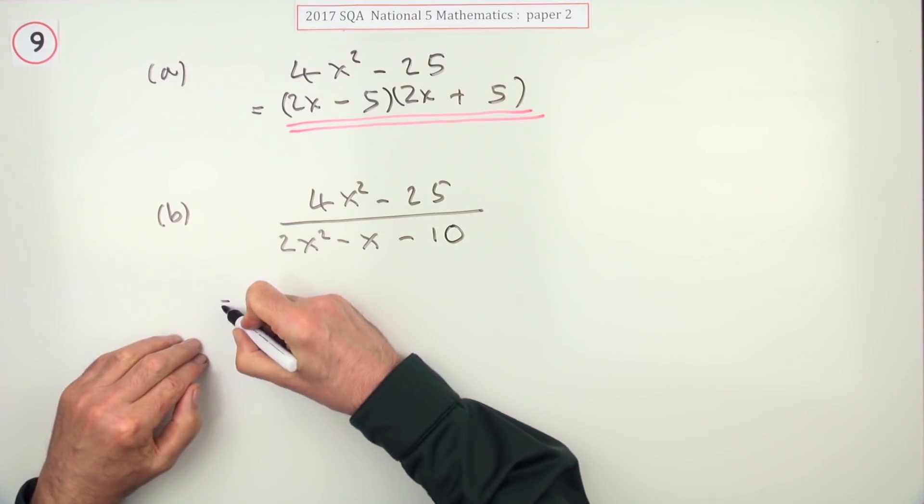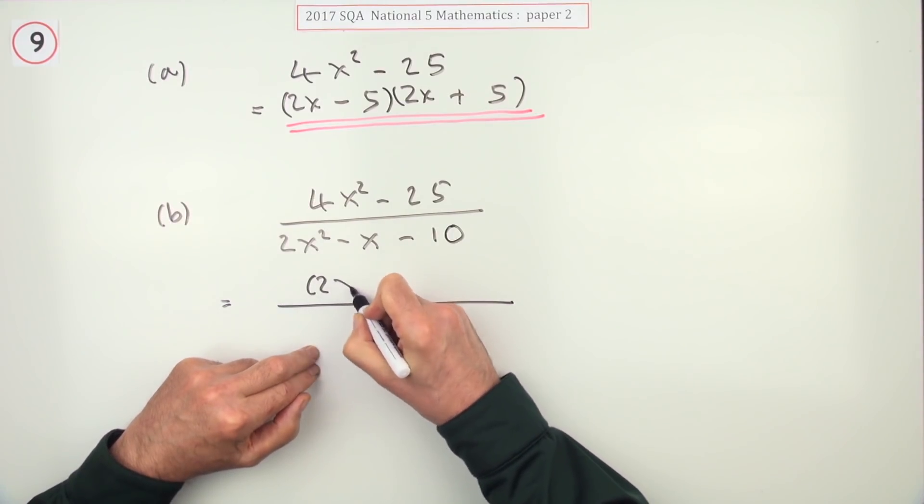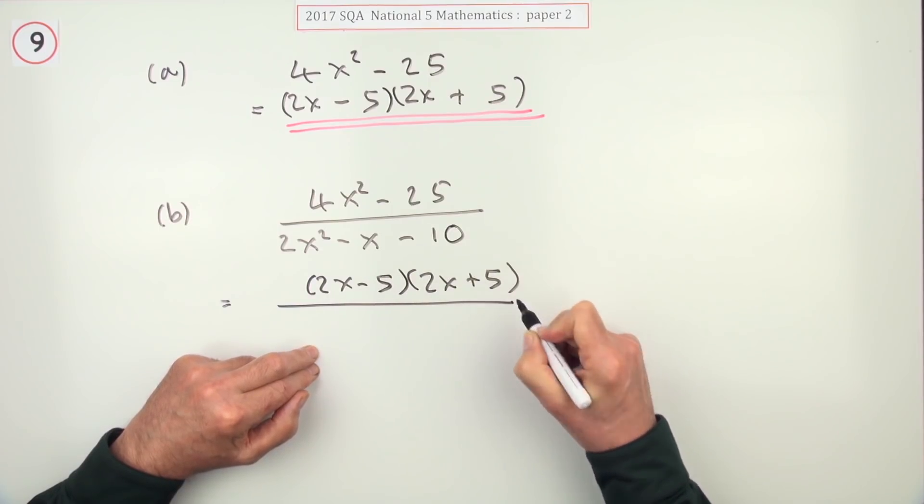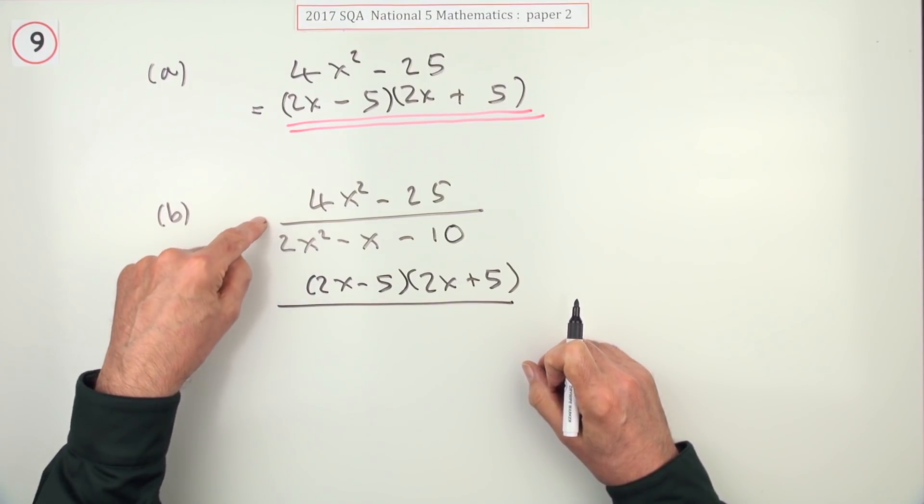And it also gives you the top of this. So the top of that is 2x minus 5, 2x plus 5. But you also know from the nature of the question because it asks you to simplify this...